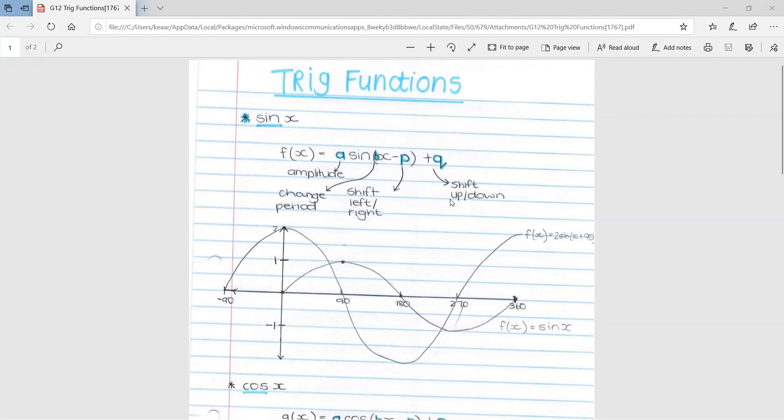With q, this represents your shift up and down. So you generally start at zero if q is zero. However, if they said q was one, you would start at one and it would be one unit higher up. A positive represents a movement up and a negative represents a movement down.